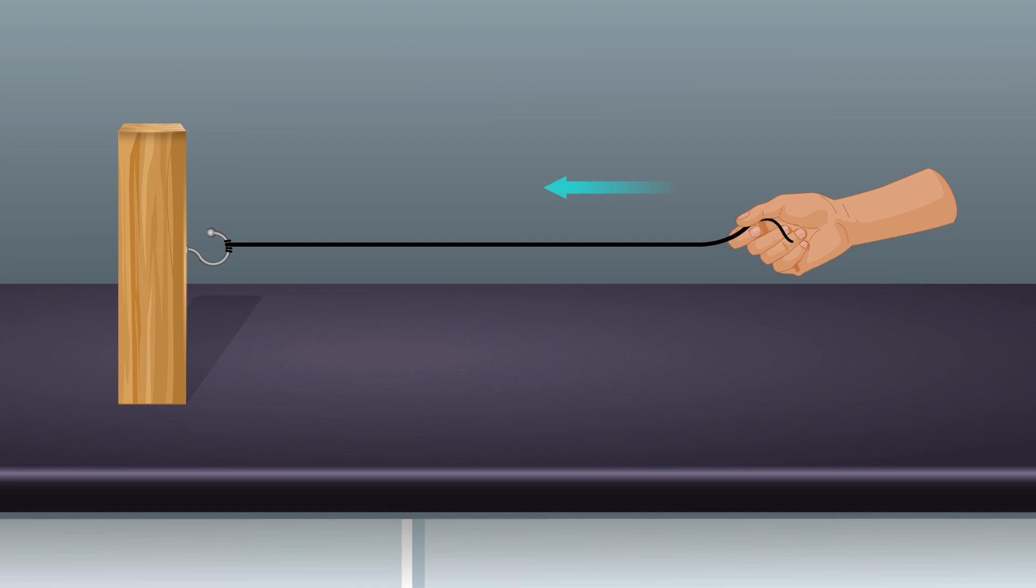Give a transverse horizontal jerk to the string and create pulse. Observe what happens to the pulse at the fixed end.